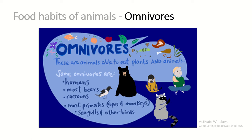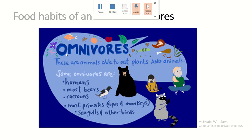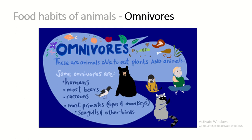Now we move to omnivores. Before discussing omnivores, can you tell me the meaning of 'omni'? Omni means both. Omnivores are those animals which include features of both carnivores and herbivores — they are able to eat both plants and animals. The best example is us, humans. Others include most bears, raccoons, most primates, seagulls, and other birds.